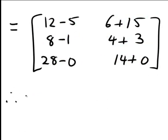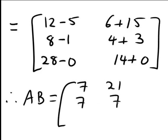Therefore, our final result for AB easily simplifies down to give us 7, 21, 7, 7, 28, 14. So that is an example of matrix multiplication.